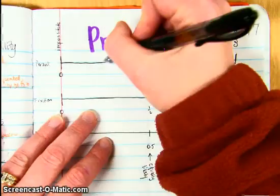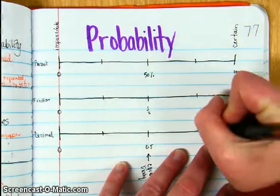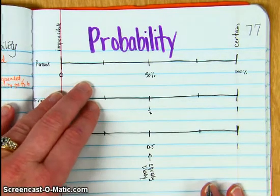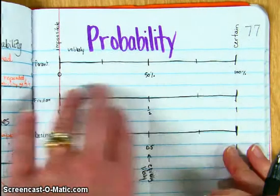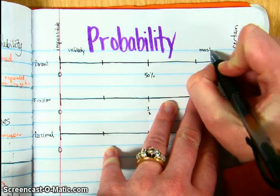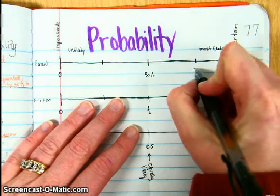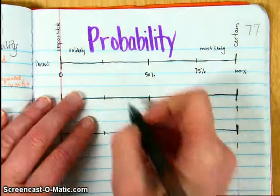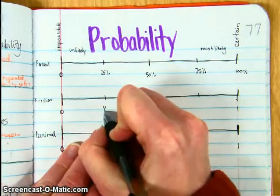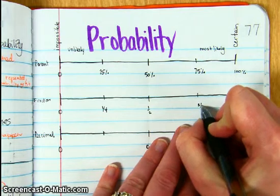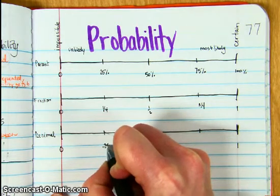And then if we divide it in half again, over here we're going to have unlikely, and we're likely, most likely, over here on the right. For percent, that would be like above 75 percent. Unlikely would be less than 25 percent. That fraction would be 1 fourth, this fraction would be 3 fourths. This decimal would be 0.25, 25 hundredths.